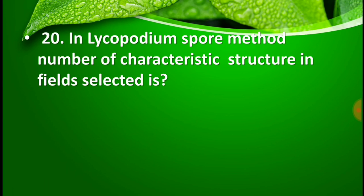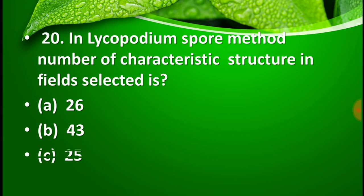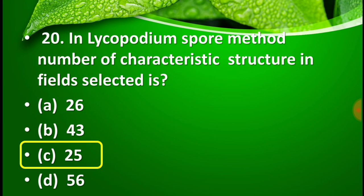Question number 20: In the Lycopodium spore method, the number of characteristic structures in a field selected is — option A: 26, option B: 43, option C: 25, and option D: 56. The correct answer is option C — 25. A total of 25 fields are selected, and the total number of Lycopodium spores is 9,400.